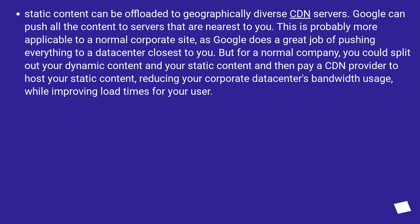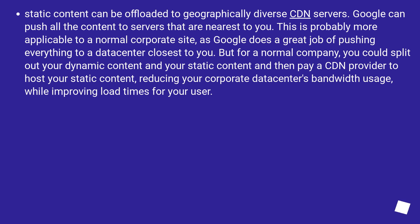Static content can be offloaded to geographically diverse CDN servers. Google can push all the content to servers that are nearest to you. This is probably more applicable to a normal corporate site, as Google does a great job of pushing everything to a data center closest to you. But for a normal company, you could split out your dynamic content and your static content and then pay a CDN provider to host your static content, reducing your corporate data center's bandwidth usage while improving load times for your users.